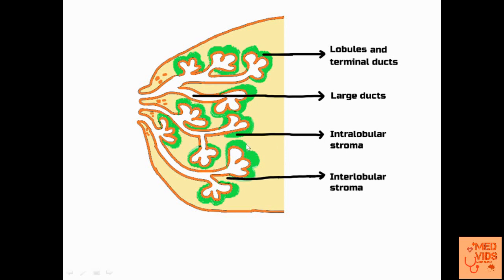Now about intralobular stroma — the region marked in green color here is called intralobular stroma. This is basically the stroma present within the lobule system. This stroma is a bit different from the stroma present outside it, which is marked in yellow color and is called interlobular stroma. Inter means between, so this stroma is present between the lobules. There are specific diseases which arise from each individual part of the breast.